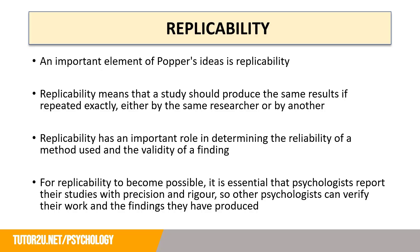Another key feature of science is replicability, which was an important element of Popper's ideas. Replicability means that a study should produce the same results if repeated exactly, either by the same researcher or by another. Replicability has an important role in determining the reliability of methods used and the validity of a finding. Remember, reliability is how consistent a measure is, and validity is how accurate the findings are. For replicability to be possible, it's essential that psychologists report their studies with precision and rigour so that other psychologists can verify their work and findings. This links to Popper's idea of falsification.